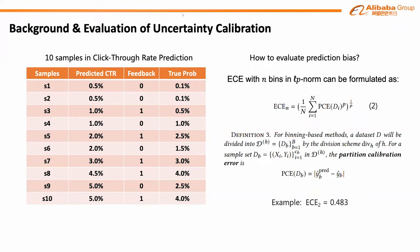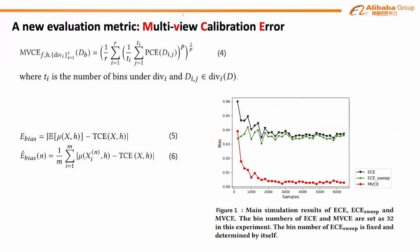Kumar et al. proposed ECE sweep, a variant of ECE replacing the uniform mass division with a new strategy. All of these methods ignore an important intuition: for a well-calibrated result, the PCE of each bin with enough samples should be close to zero. But ECE and ECE sweep only evaluate calibration error from a certain perspective. So we propose MVCE in equation 4 to mitigate this problem. Given a bin size, we randomly sort the samples and divide them into bins in a uniform mass way. We repeat this process R times and compute the mean error as the MVCE.